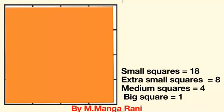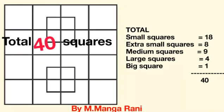Friends, now we can calculate the total squares. Small squares are 18. Extra small squares are 8. Medium squares are 9. Large squares are 4. Big squares are 1. And total squares are 40.